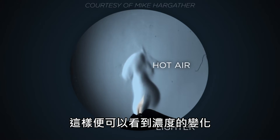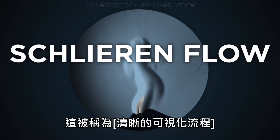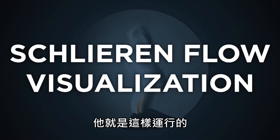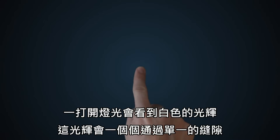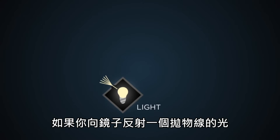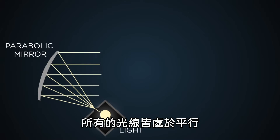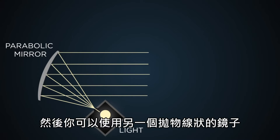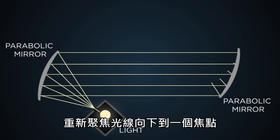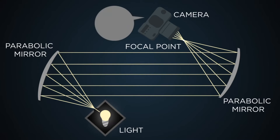We're able to see the density change thanks to a technique called Schlieren flow visualization. Here's how it works: you start off with a light shining through a single slit. If you reflect that light off a parabolic mirror, all the rays become parallel, and then you can use another parabolic mirror to refocus the light down to a single focal point, and then in through the lens of a camera to make a picture.